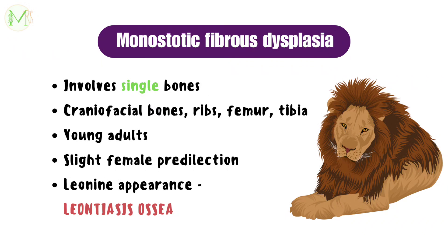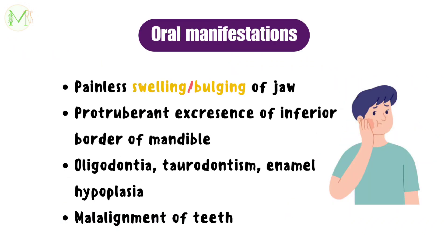Monostotic fibrous dysplasia involves only one bone, which may be craniofacial bones, ribs, femur, or tibia, and mostly affects young adults. Slight female predilection may be noted. The patient presents with leonine appearance, also known as leontiasis ossea, if the maxilla and associated bones are affected. Oral manifestations include painless swelling or bulging of the jaw with protuberant excrescence of the inferior border of the mandible, oligodontia, taurodontism, enamel hypoplasia, and malalignment of teeth.